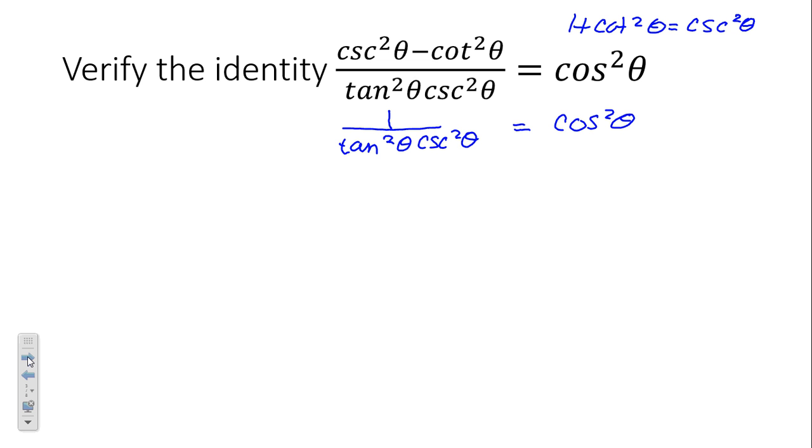I don't like having things in the denominator. Is there a way we can move them to the numerator? 1 over the tangent squared is the cotangent squared, right? What's 1 over the cosecant squared? Sine squared. So we're making one change each time. Here we rewrote the numerator. Now we're bringing them out of the denominator and basing them on the reciprocal functions.